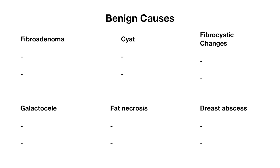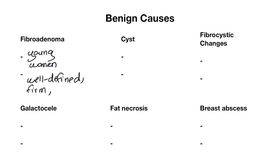Let's go over some of the benign causes. The exam writers really like for you to be able to distinguish between these different etiologies, so let's go over some high yield characteristics. The fibroadenoma is the most common benign neoplasm in the breast. It is found oftentimes in young women — teenagers, women in their 20s and 30s. It's often well-defined and circular, firm, rubbery, and mobile. Rubbery is often a term you'll see associated with fibroadenoma.